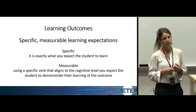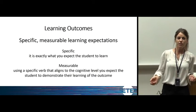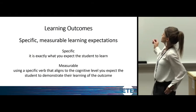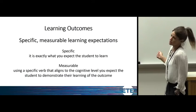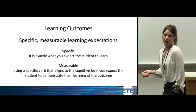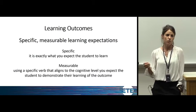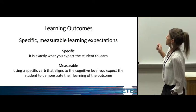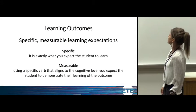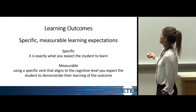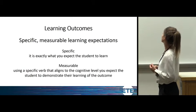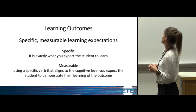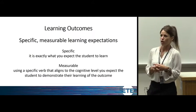The first thing is learning outcomes, and one of the best things to do is actually define what a learning outcome is. A learning outcome is a specific, measurable learning expectation that you have for your students. They're vastly different from course objectives that we usually write in a syllabus. Specific means it is exactly what you expect the student to learn, and measurable means using a specific verb that aligns to the cognitive level at which you expect the student to demonstrate their learning.